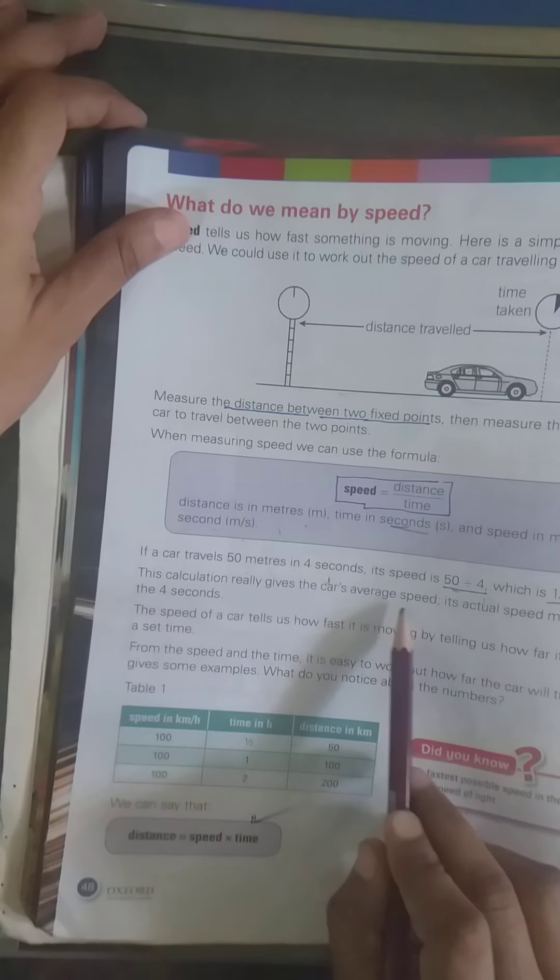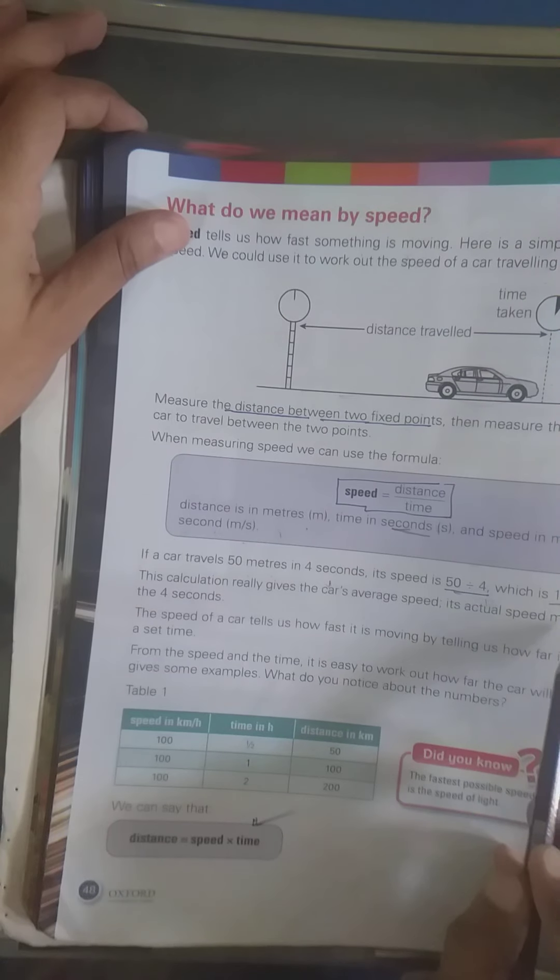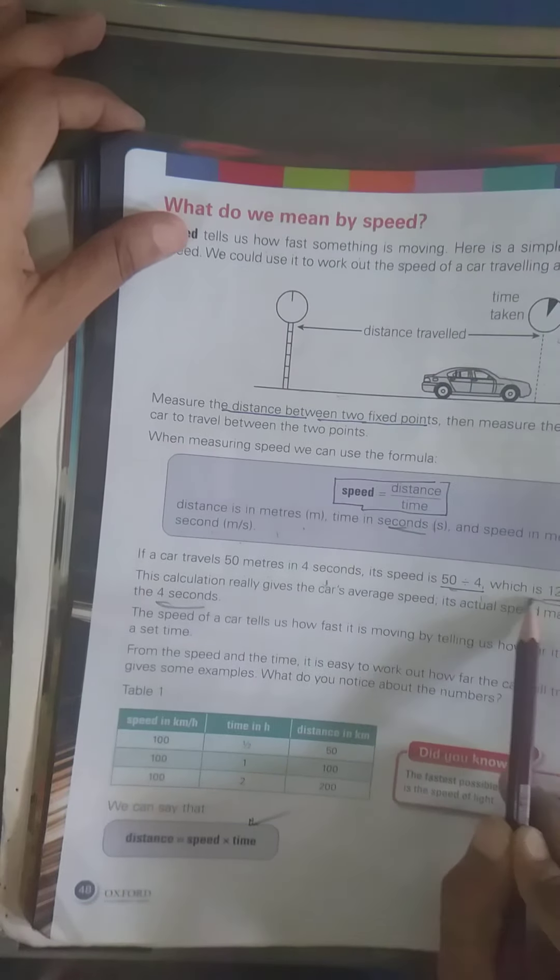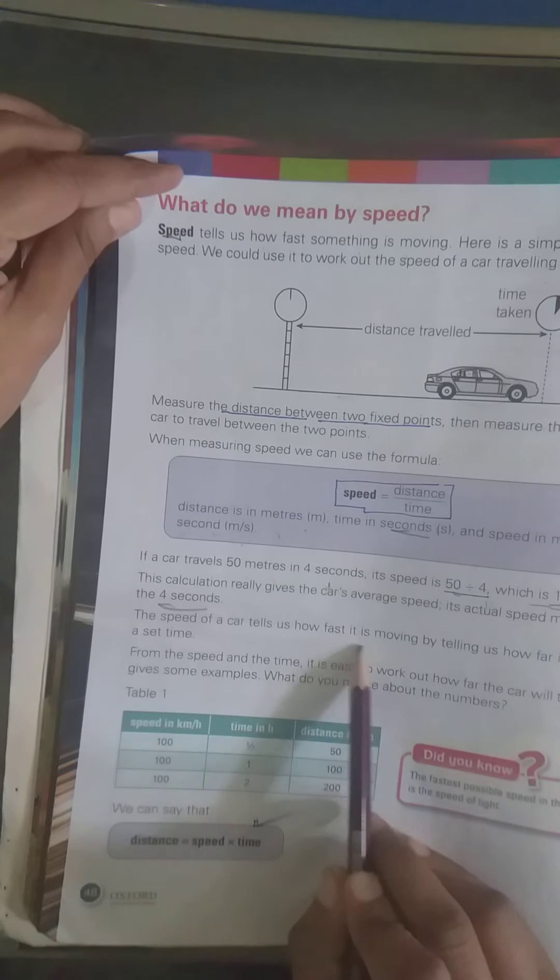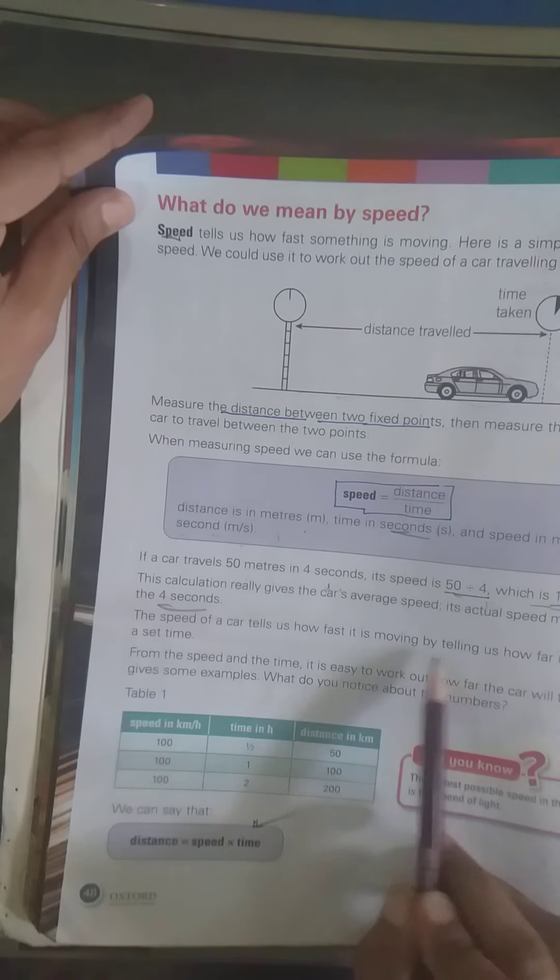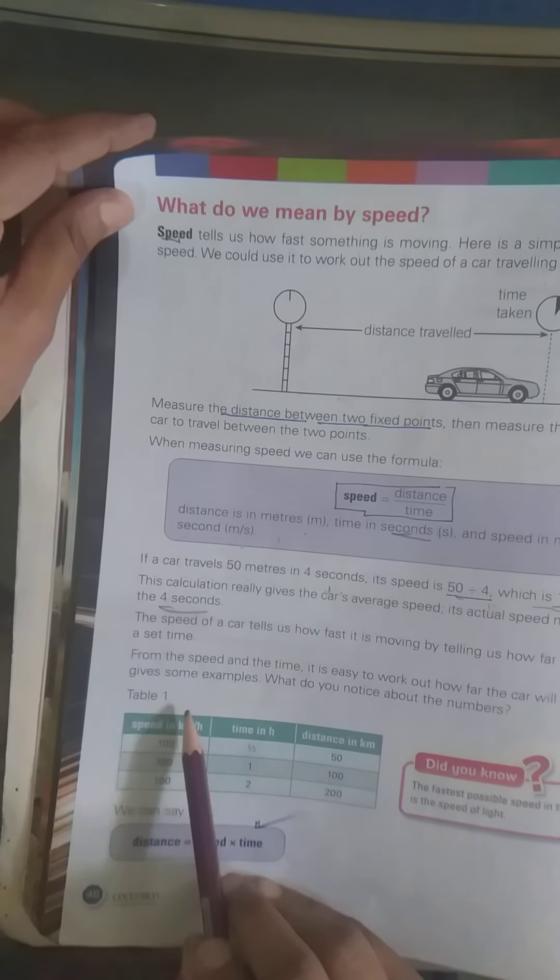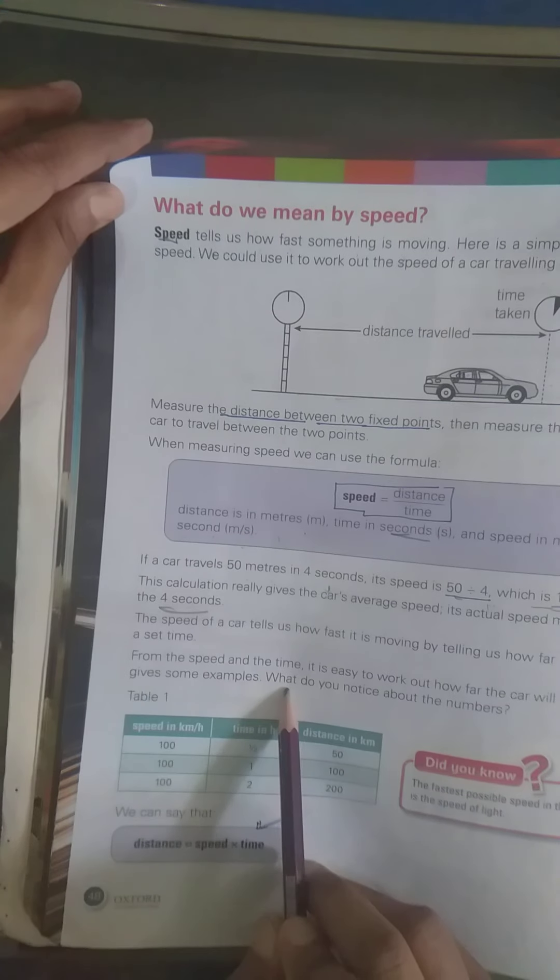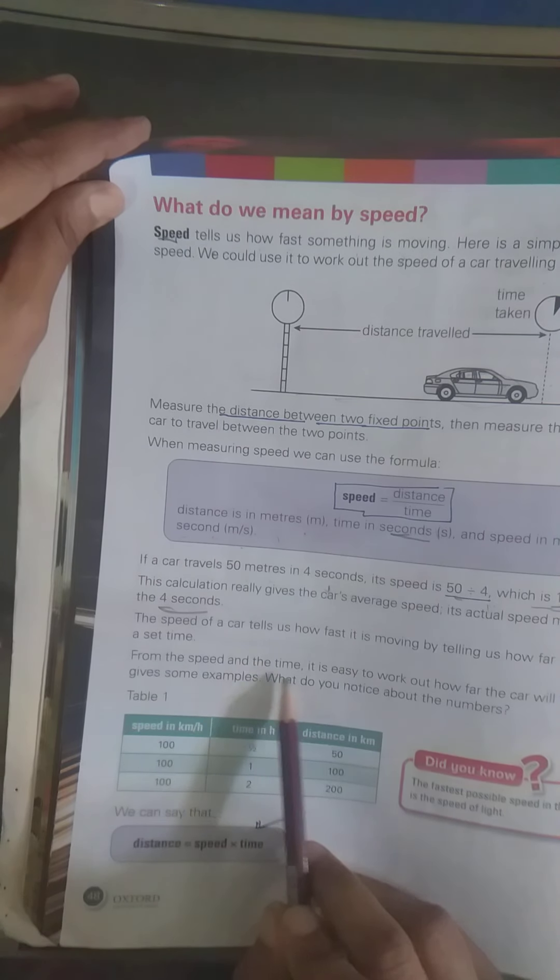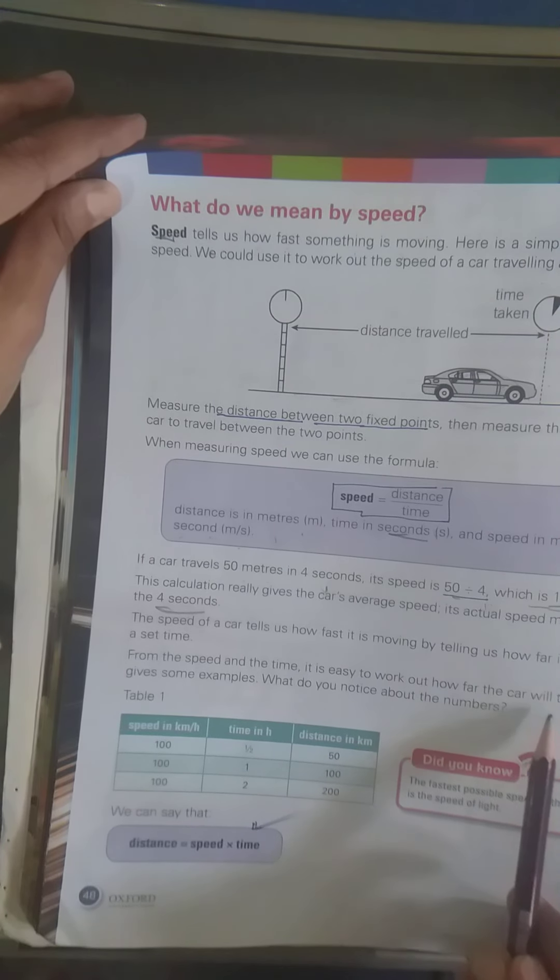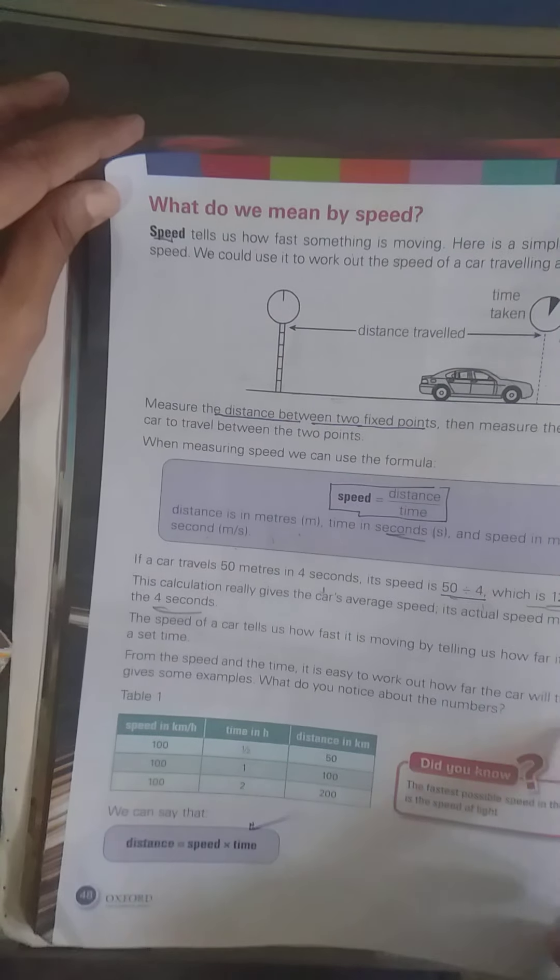Calculation joh hai humare paas average speed joh hai. Yarni ke 4 second hai, 4 second mein johne kar nne itna travel kiya. Ab joh speed kar ki woh humare paas kitna move kar rahi hai or kitna time isko lag rahi hai. Speed joh hai hum kishi bhi chis ki speed, yeh easily hum kya karthi hai work out karthi hai iske liye jib woh car travel karthi hai.